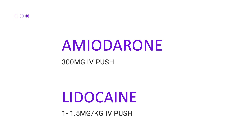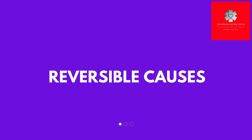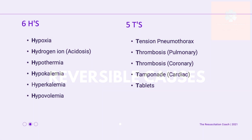Follow that with a D5 water flush. You could also consider giving lidocaine at 1 to 1.5 milligrams per kilogram. We should also think about reversible causes — why is our patient in cardiac arrest? Think about your H's and your T's. Continue high quality CPR.